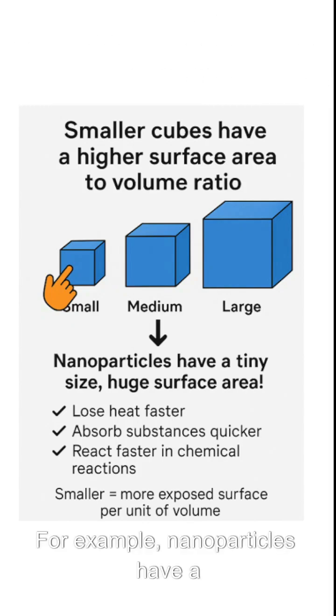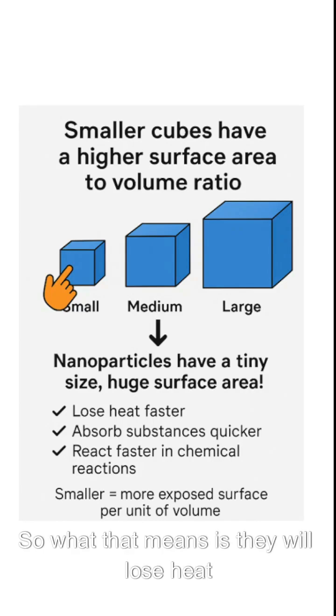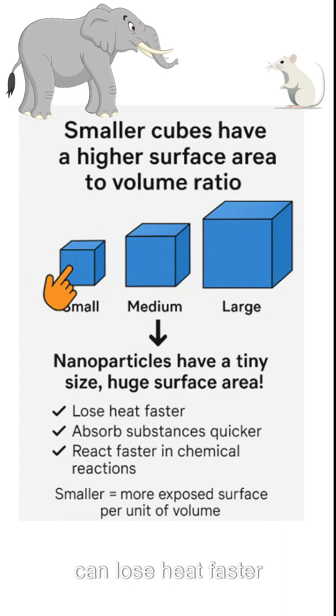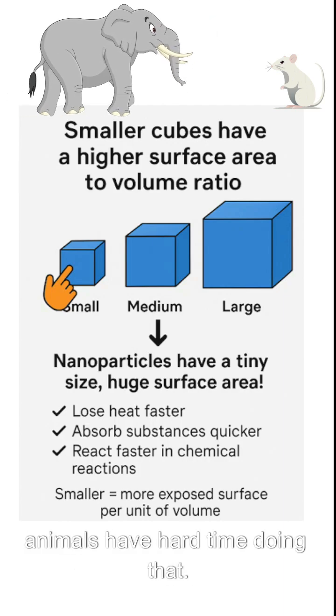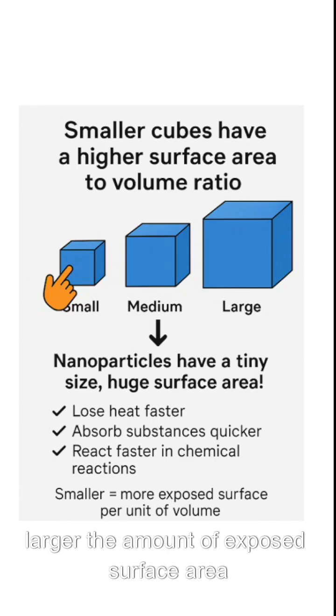For example, nanoparticles have a tiny size but huge surface area compared to their size. So what that means is they will lose heat faster, which is also linked to in biology, smaller animals can lose heat faster through their bodies, whereas larger animals have a hard time doing so. As smaller the particle, larger the amount of exposed surface area per unit volume.